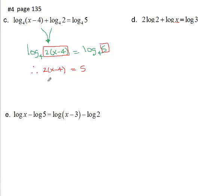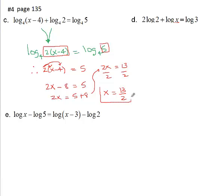Distributive property and solve. Now we're down to a simple linear equation. Two x minus eight equals five. Add eight to both sides to isolate. You want to isolate that x. So we've got two x equals five plus eight. Two x equals 13. Divide each side by two. And x equals 13 over two, or 6.5 if you want to go to a decimal.